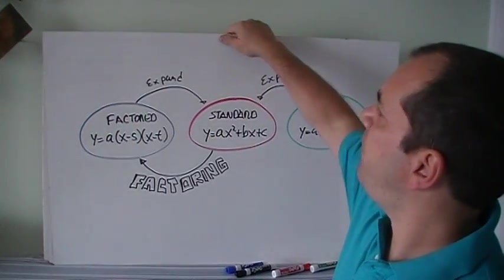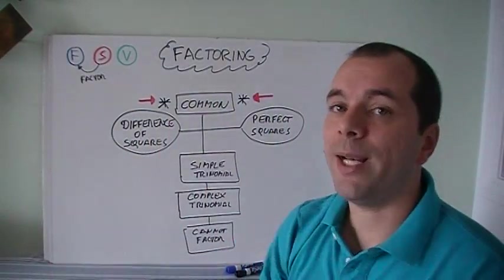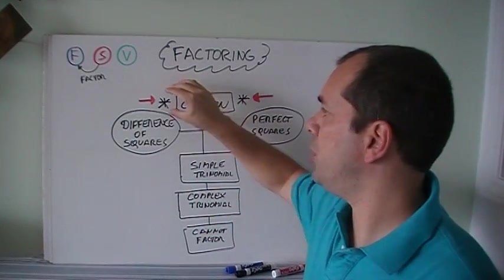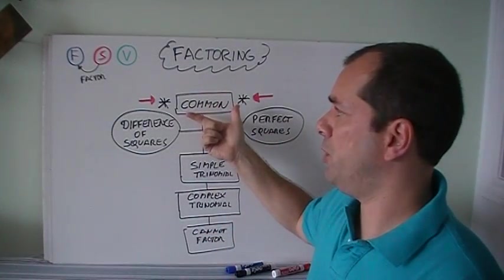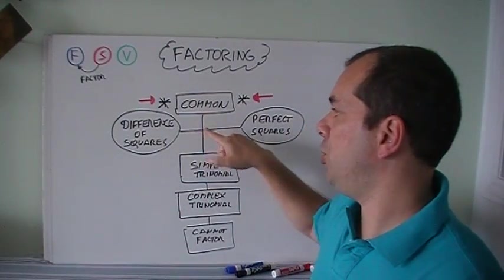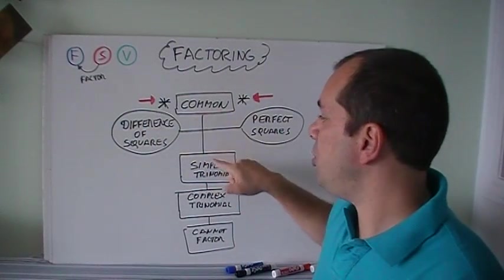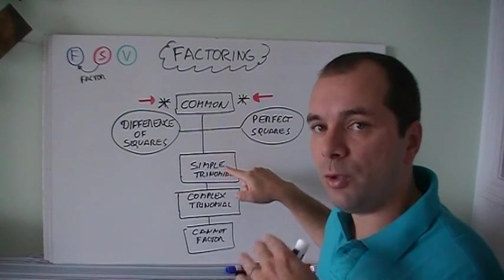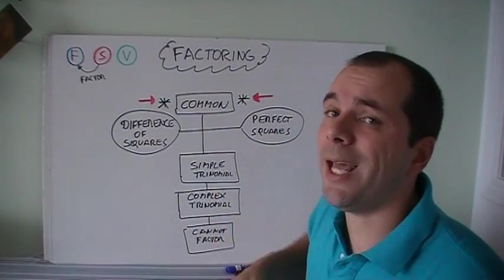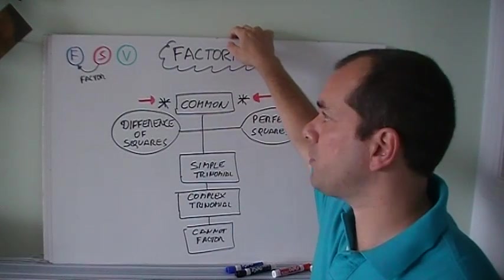So the issue with factoring is that it's not just one method or one case. There's a lot of stuff to it. I'm going to give you a quick view of it. Today we're just going to talk about common factors. The first thing you look at when you try to factor something is you're going to look for common factor. Then you check for both special cases, difference of squares and perfect squares. Then you check if it's a simple trinomial, if not, if it's a complex trinomial. And then maybe it's one of those cases where you just cannot factor it. We're going to have to look at all these cases individually on future videos.